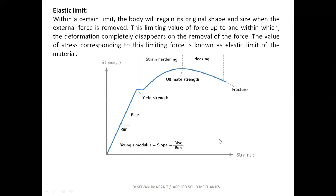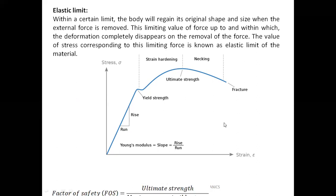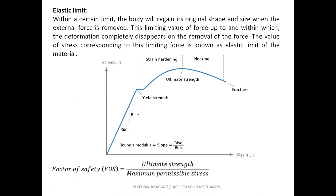The stress-strain diagram shown is an experimental one for a mild steel specimen connected in a UTM — Universal Testing Machine — for a tensile test. You can see the ultimate strength, the fracture point, the breaking point, necking formation, yield strength, proportional limit, elastic limit, upper yield point, and lower yield point. Factor of safety is the ultimate strength divided by the maximum permissible stress, or working stress, or maximum allowable stress. The factor of safety must always be greater than one — then only the design will be safe.